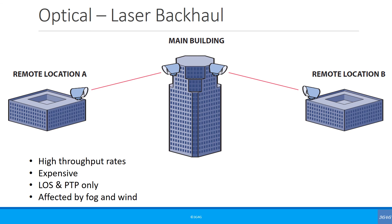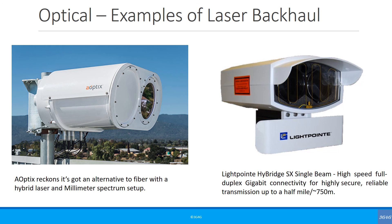One final option is optical or laser backhaul. It requires point-to-point connectivity and line of sight, and can be affected by conditions such as fog and wind. It can give high throughput rates, but expense is an issue. There is a hybrid laser and millimetre-wave setup: when severe fog or wind blocks the line of sight and the laser beam is not functioning, they can transmit on millimetre wave, providing some redundancy.